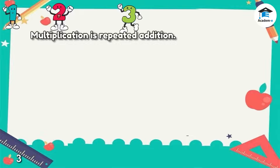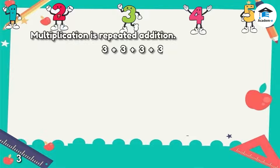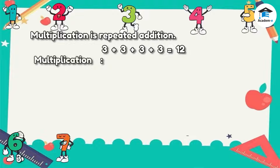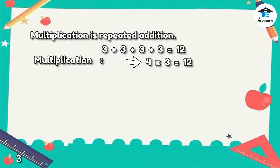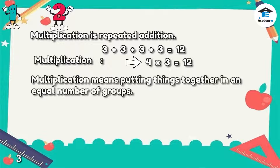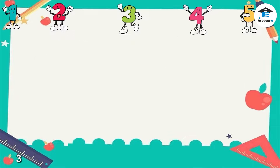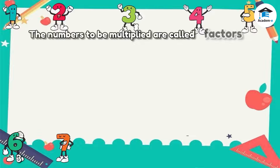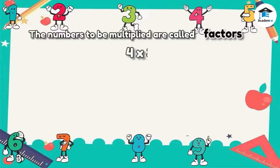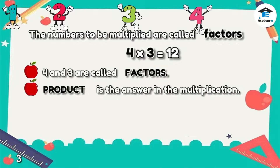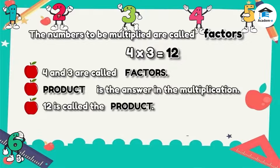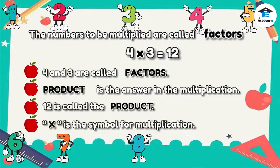Multiplication is repeated addition. For example, 3 plus 3 plus 3 plus 3 equals 12, and in multiplication, 4 times 3 equals 12. Multiplication means putting things together in an equal number of groups. The numbers to be multiplied are called factors. In 4 times 3 equals 12, the numbers 4 and 3 are called factors. The product is the answer in multiplication, so 12 is called the product. X is the symbol for multiplication.